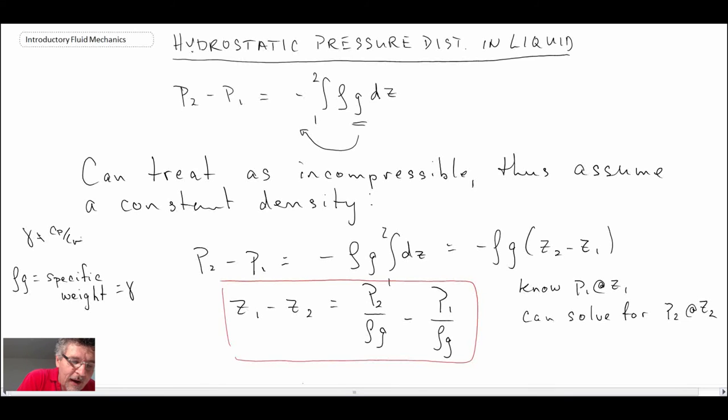The cp over cv ratio in fluid mechanics, we use a little k for that - the ratio of specific heats. Another thing we see: